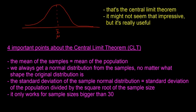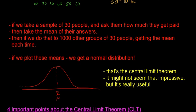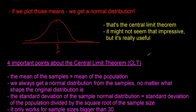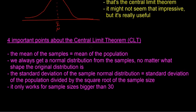The mean of the samples always equals the mean of the population. Next, we always get a normal distribution from the samples, no matter what shape the original distribution is. There's a thing called the exponential distribution that looks very skewed, and if you take loads of samples from it, you still end up with a normal distribution. Even crazy-shaped distributions will still produce a normal distribution — no matter what the underlying distribution is, you always end up with a normal distribution.